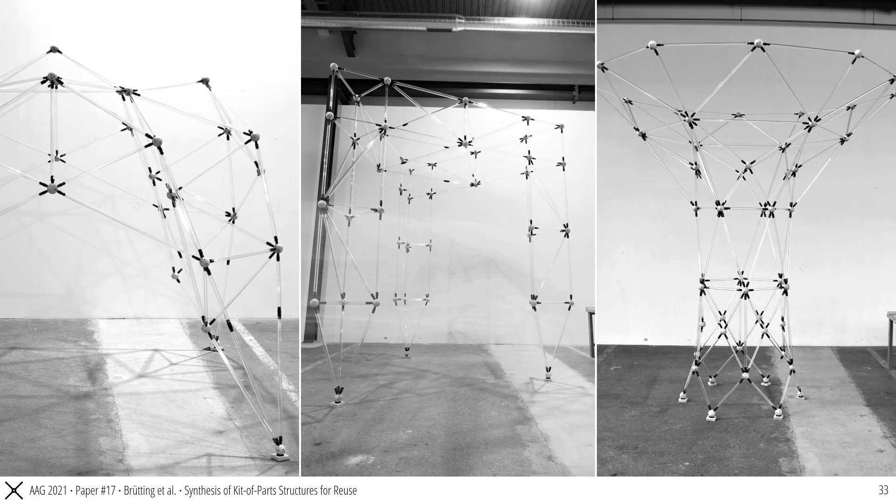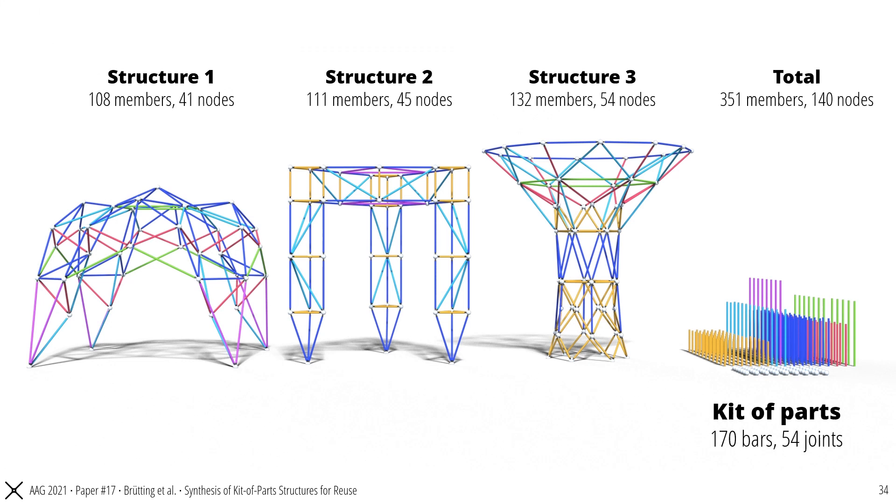Now, I would like to show you the application of these methods to design three prototype structures. Here you see the final prototypes, a grid shell structure, a portal frame, and a column structure that have been realized. The three structures consist of 351 members and 140 nodes in total. Through our methods, the kit of parts and the three systems have been interactively designed. In this case, we obtained an optimal kit of parts with six different bar lengths between 40 cm and 1.40 m and the minimum number of 54 bespoke joints.